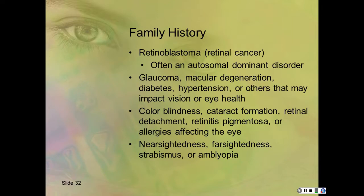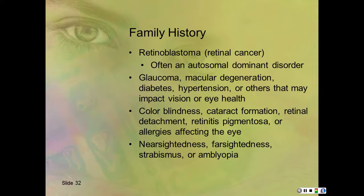You check colorblindness especially on DOT physicals because drivers need to know the streetlight colors. That's about the only time you really test for colorblindness outside of a Department of Transportation physical. Other family history items include cataract formation, retinal detachment, retinitis pigmentosa, allergies affecting the eye, nearsightedness, farsightedness, strabismus, and amblyopia.